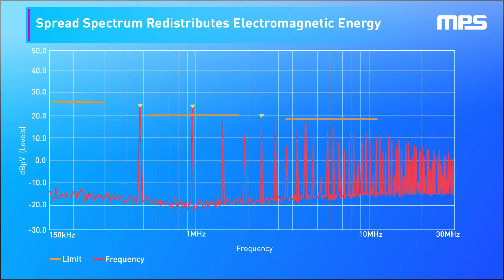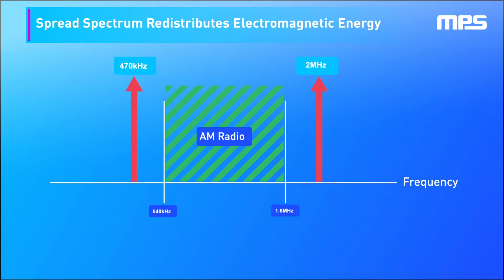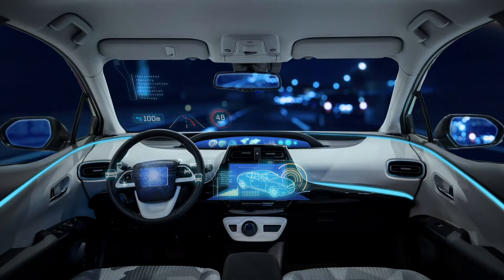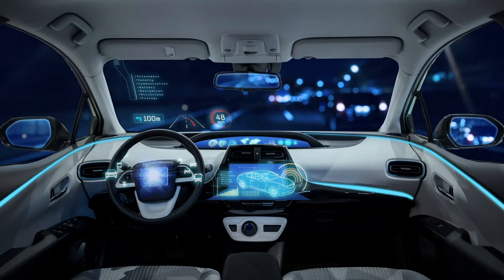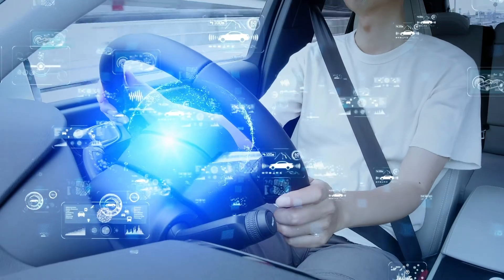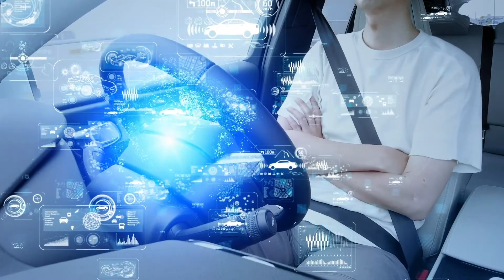Spread spectrum takes electromagnetic energy that's focused at certain frequencies and spreads it out. Most automotive power supplies are intended to operate at a fixed frequency, usually above or below the AM radio band. You'll get a large spike in the energy emitted by the power supply at this frequency, as well as its harmonics. The higher the amount of power that the power supply has to deliver, the larger the spike. Unfortunately, this can affect other electronics or sensitive antennae that may be near that power supply. That's why carmakers have strict EMC specifications limiting how much of this interference every electronic module is allowed to generate.